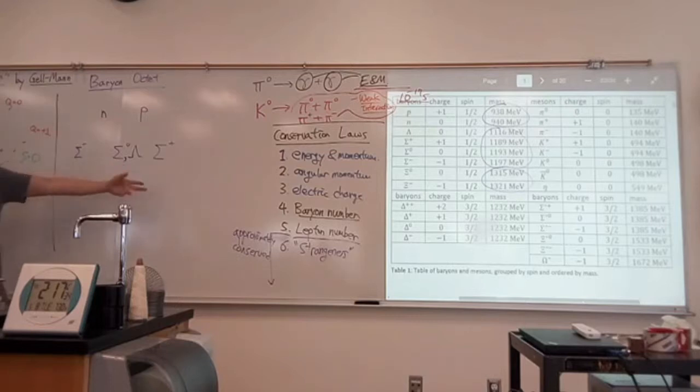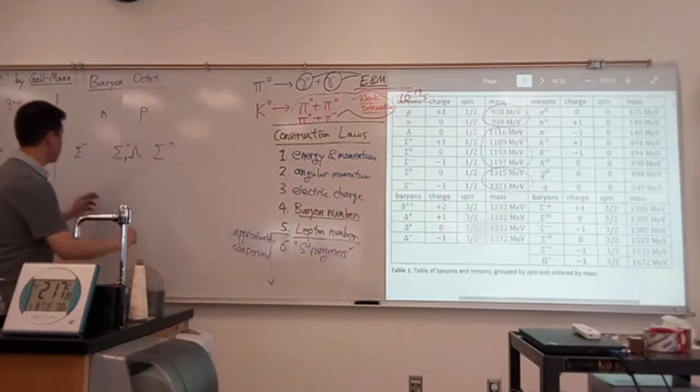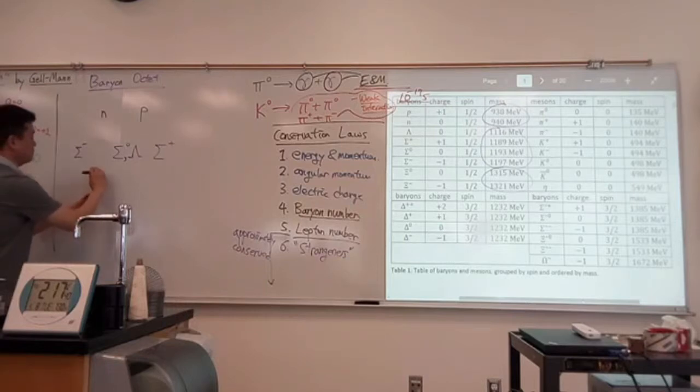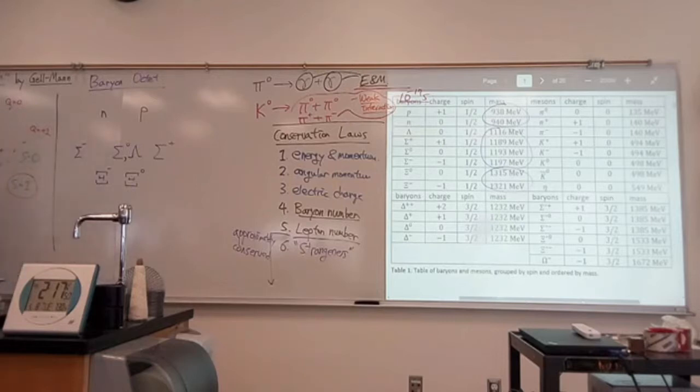And here the most negative is actually negative, so let's put xi minus here and xi neutral here. So these are organized by weight.